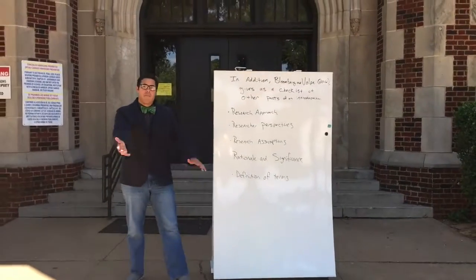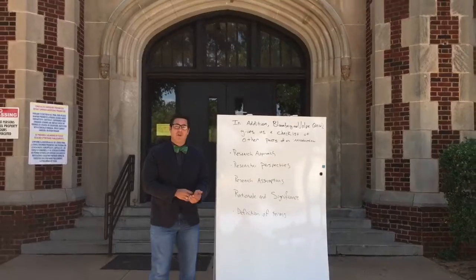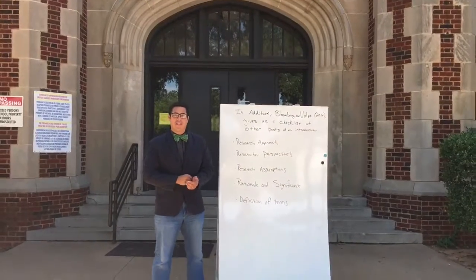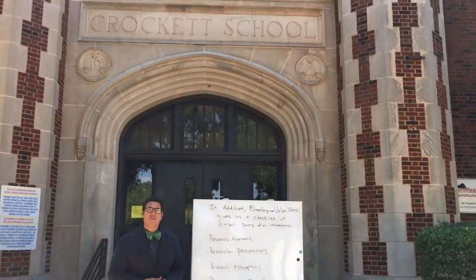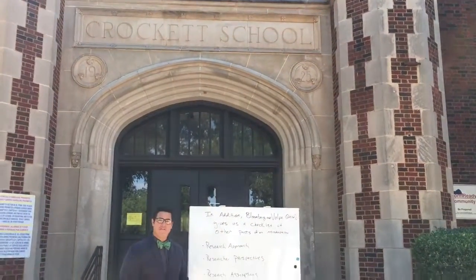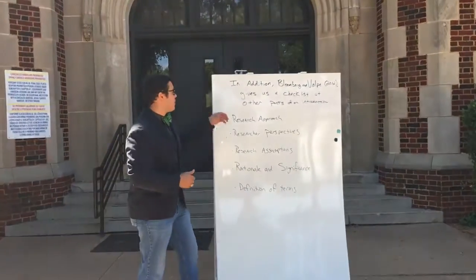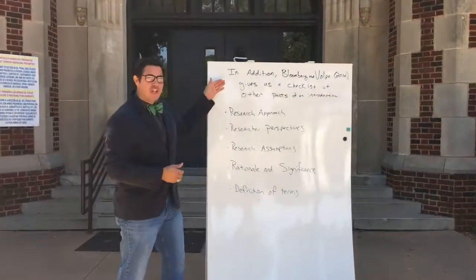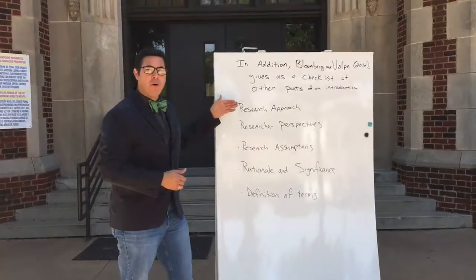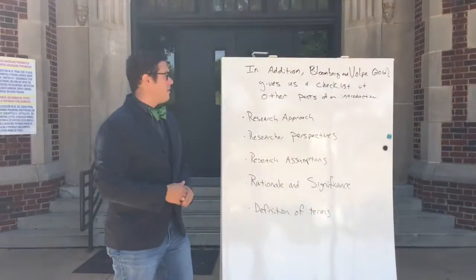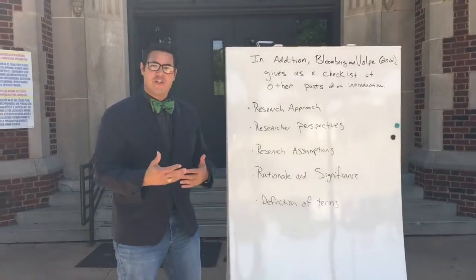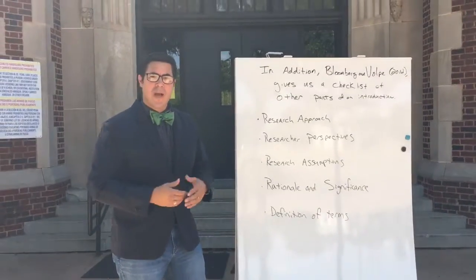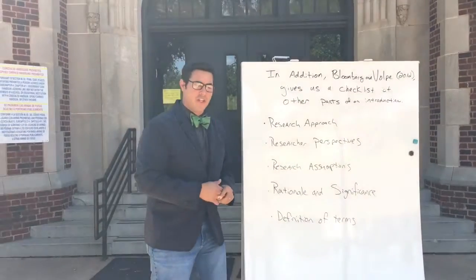We just got back from Sunday, that was built in 1926. We're currently at Crockett — Crockett was built in 1925. In addition, Bloomberg and Bulb in 2012 gives us a checklist of other parts of an introduction in a chapter 1 dissertation.